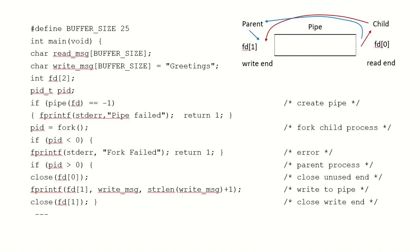Let us take an example to see how this works. Here we want only the parent to write into the pipe, so we will disable the child's write access. Also, we want only the child to read from the read end, so we will disable the parent's read access. We define a buffer size of 25. There is a character array called read_message and another character array for the write message, where we have written a message — let us say 'greetings' — into that buffer.